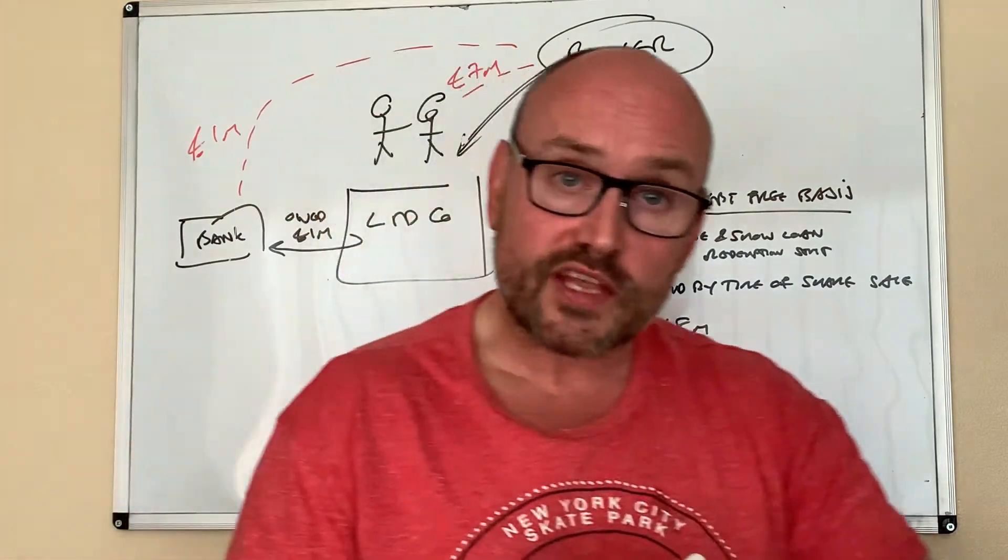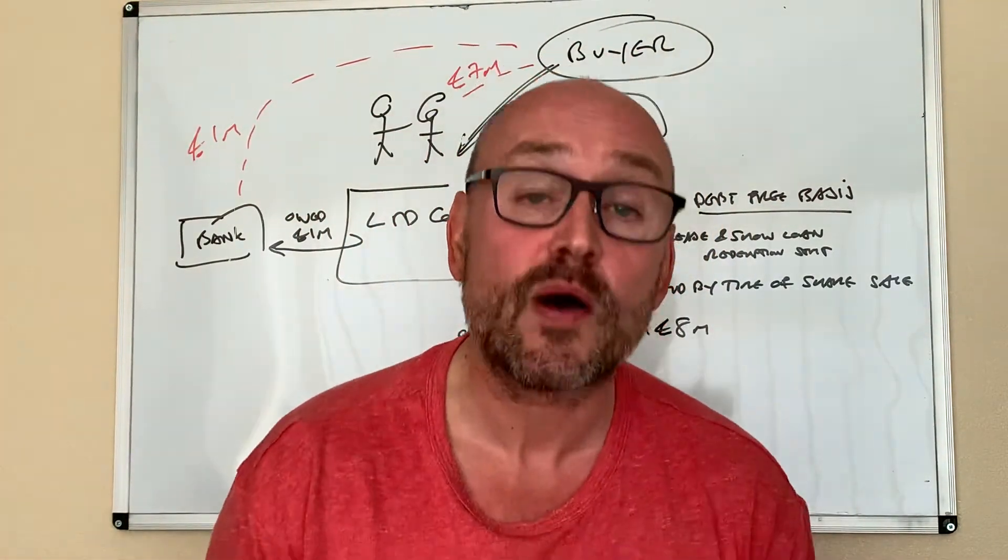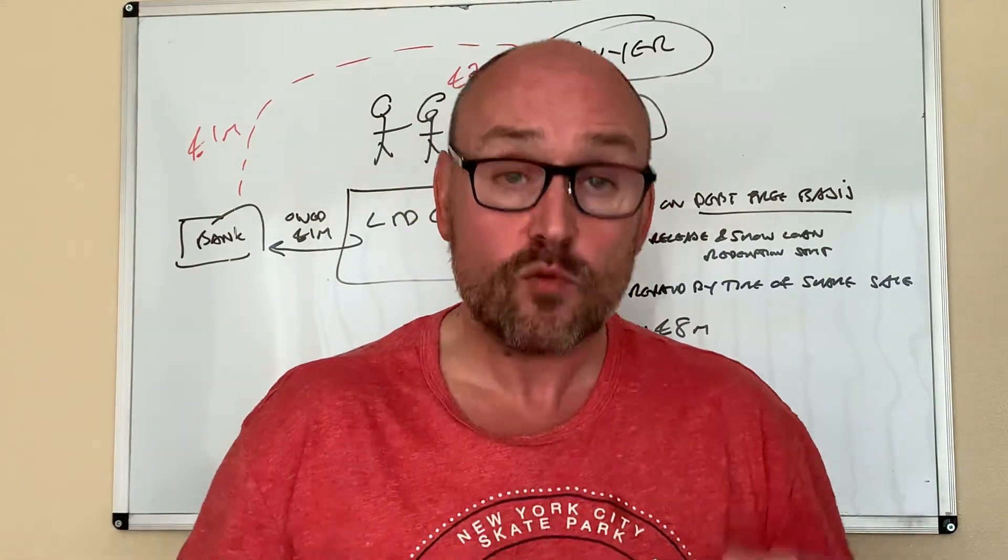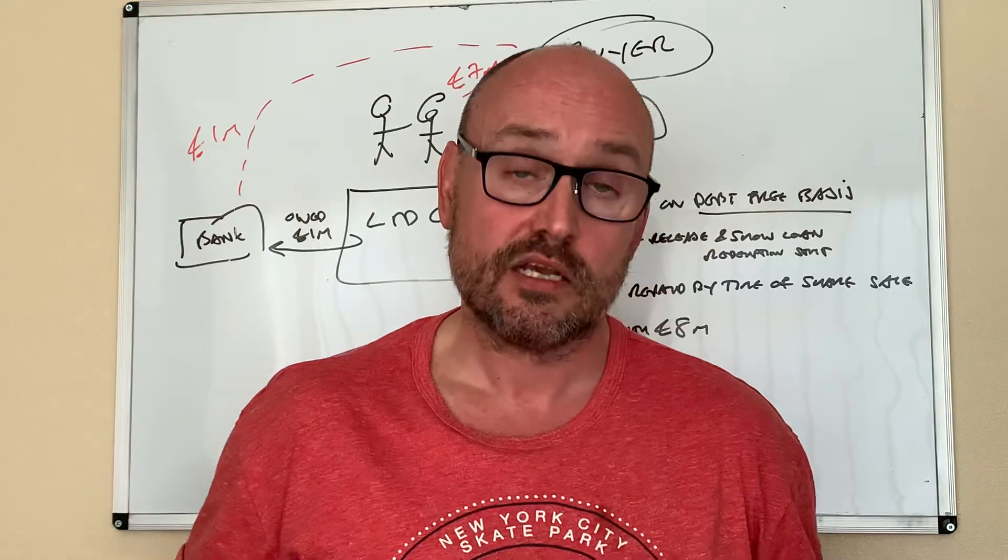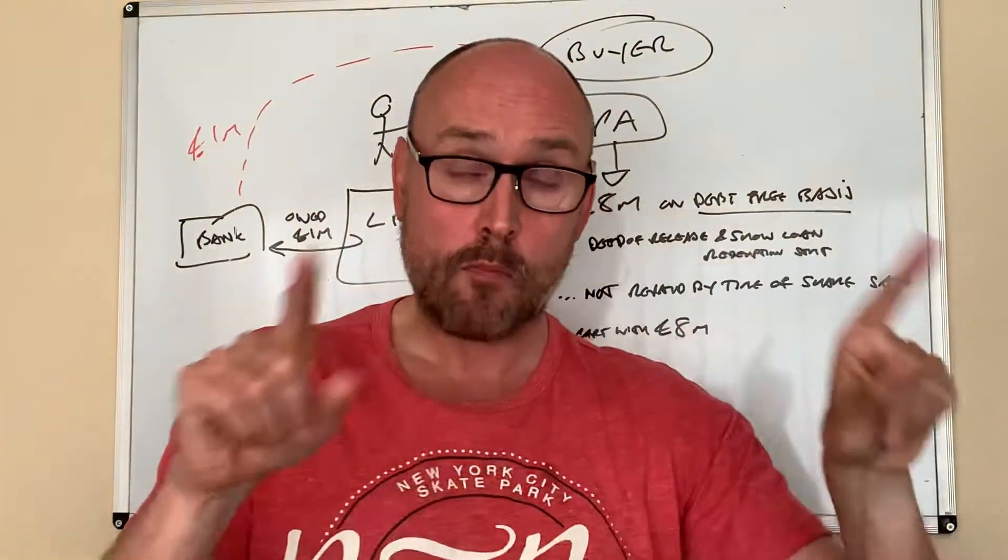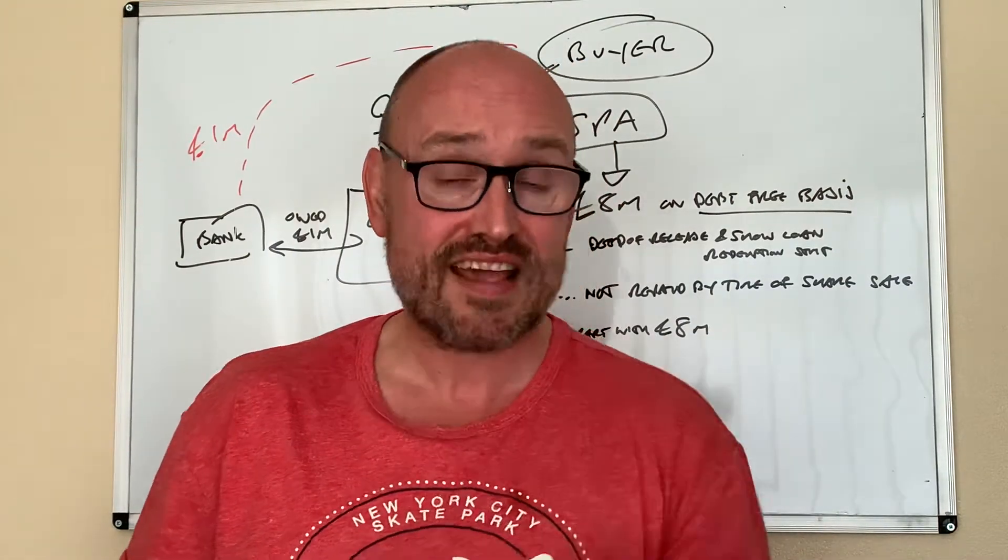And so this thing went to the tribunal and unfortunately for the taxpayer, the taxpayers lost and HMRC won. And it was decided that indeed the correct figure, the combined gain for these two ladies was eight million and not seven million.